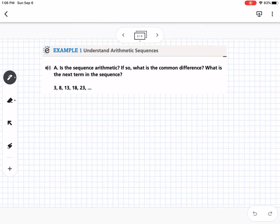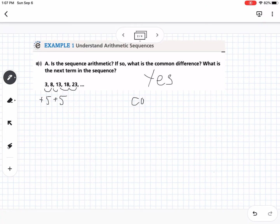The first example asks: is the sequence arithmetic? If so, what's the common difference, and what's the next term in the sequence? For something to be arithmetic, it means we're either adding or subtracting by a common term each time. You can see, to get from 3 to 8, we're adding 5. From 8 to 13, we're adding 5, 13 to 18, and 18 to 23, we're adding 5. So we would say yes, this is arithmetic.